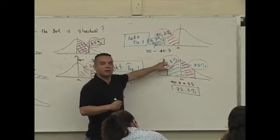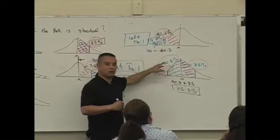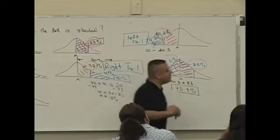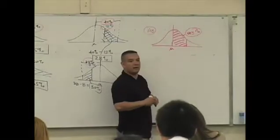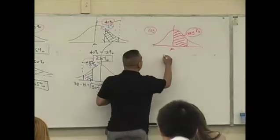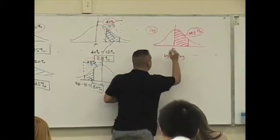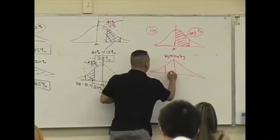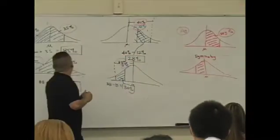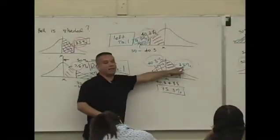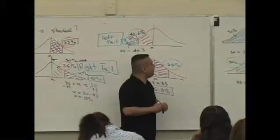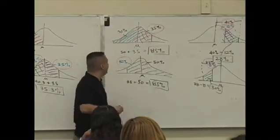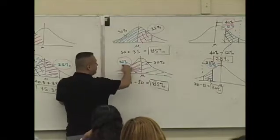Why is this the key? Because of symmetry — this value on the right is the same as what you have on the left. So if I knew this red value, I can answer the question. If I know that this is 35 percent, I can answer the question: 50 plus 35 is 85. Because of symmetry, if I know the red value is 35, then 35 plus 50 is 85.